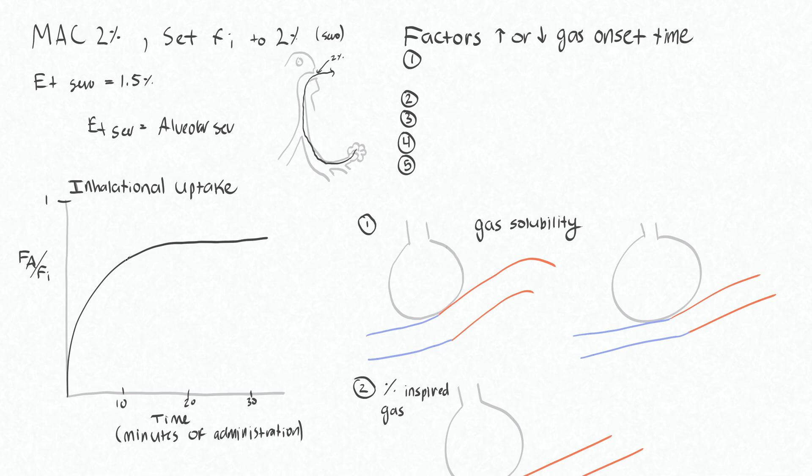By comparison, desflurane increases quicker, or the amount of desflurane left over in the alveoli is more. Just remember that that fraction of alveolar gas was proportional to the pressure of that alveolar gas, which was equal to the pressure of that gas in your central nervous system.